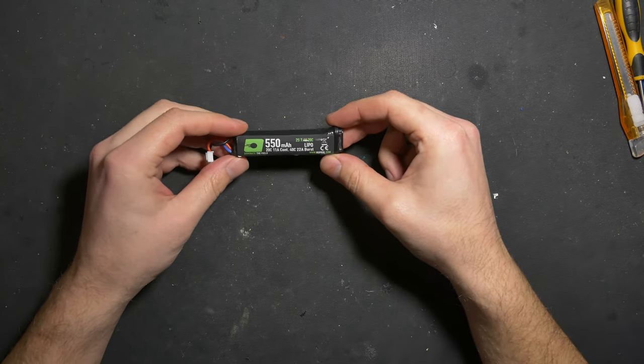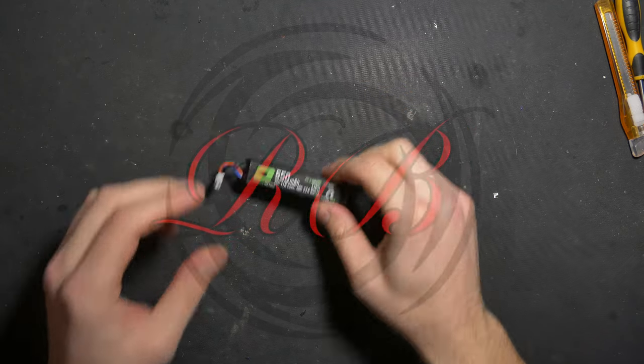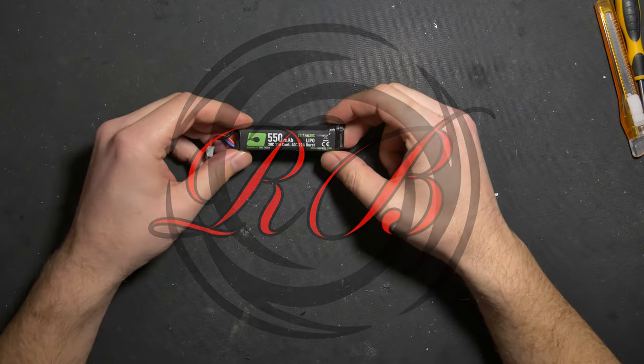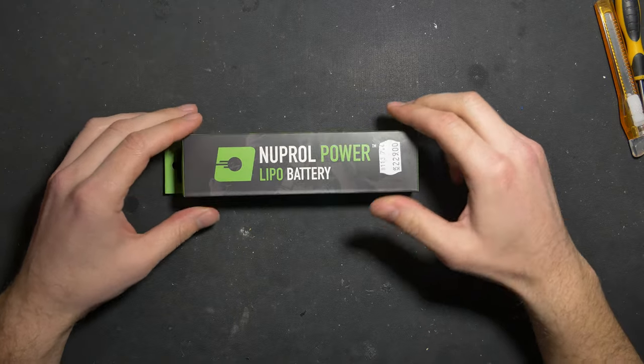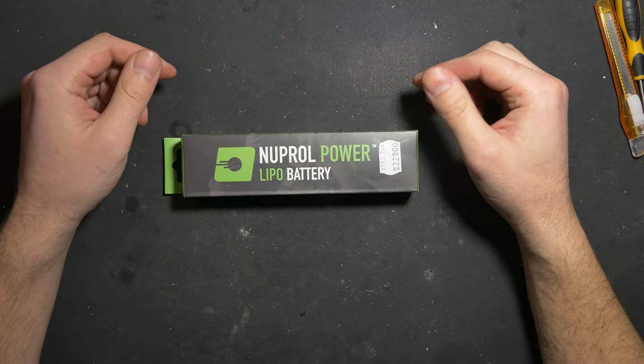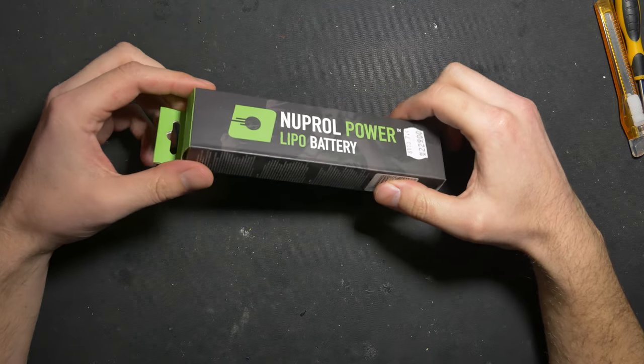Is this the best battery you can get for your AAP? Let's find out. This battery comes in a package like this. It's from Nuprol, it has 550mAh capacity and 20c, so it should be more than enough for a stock AAP.